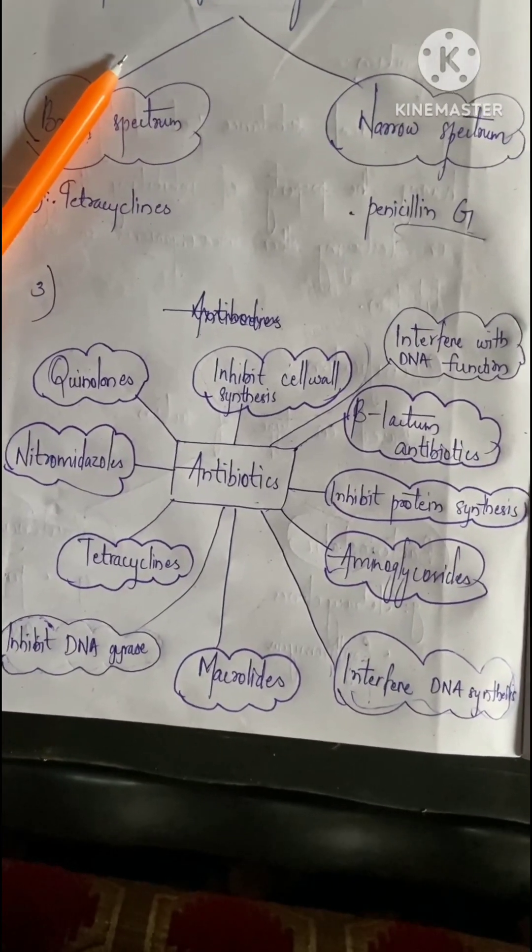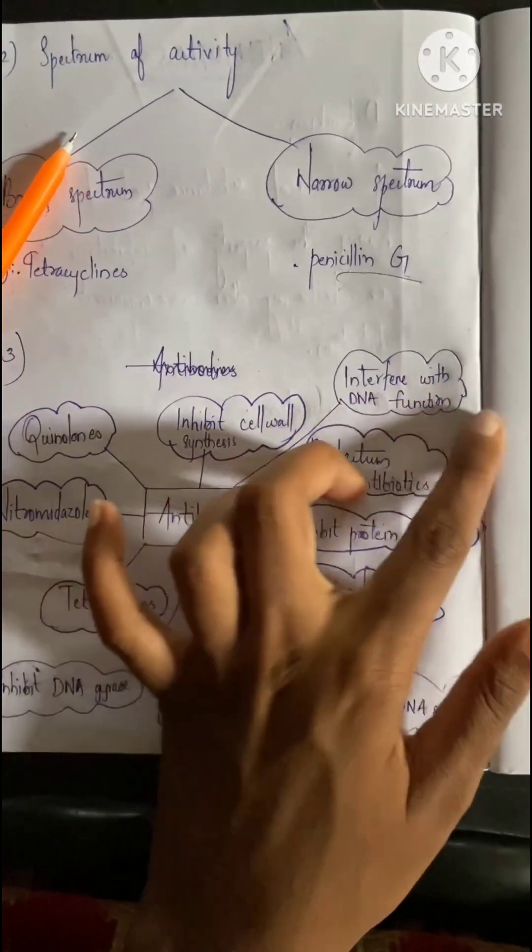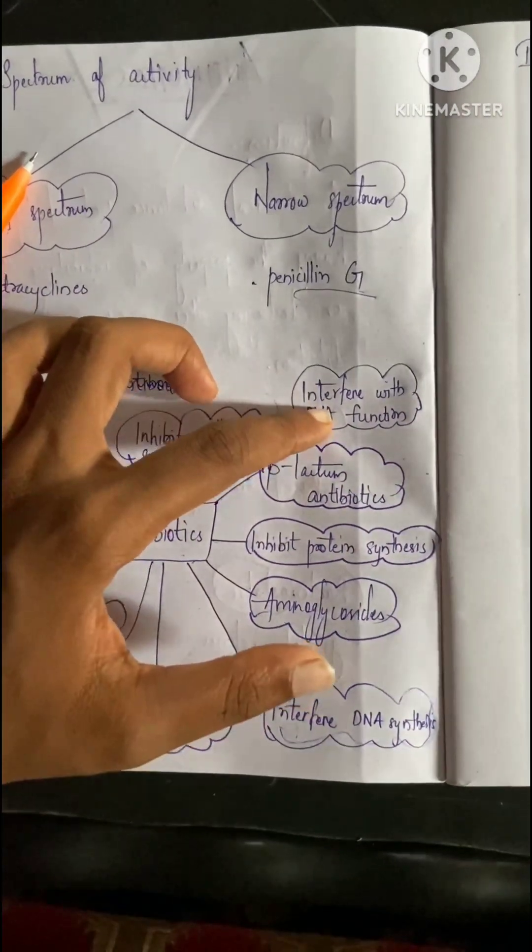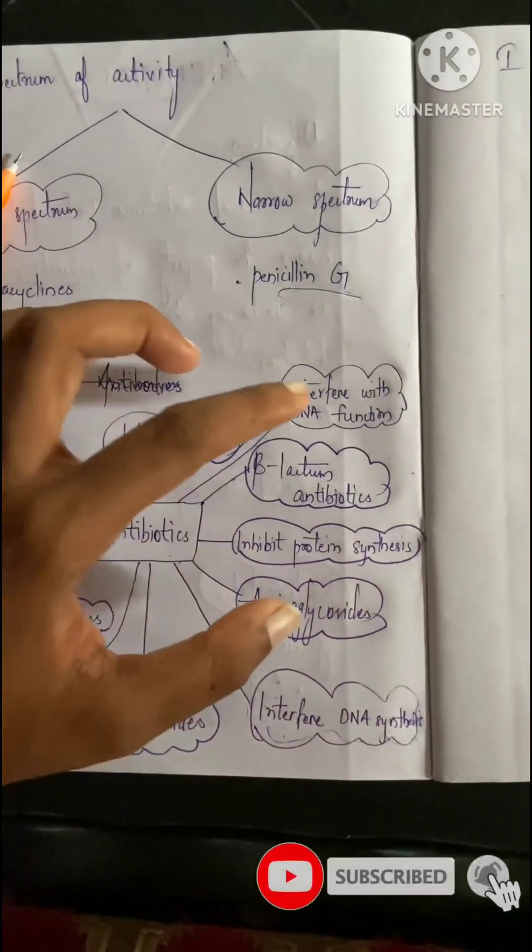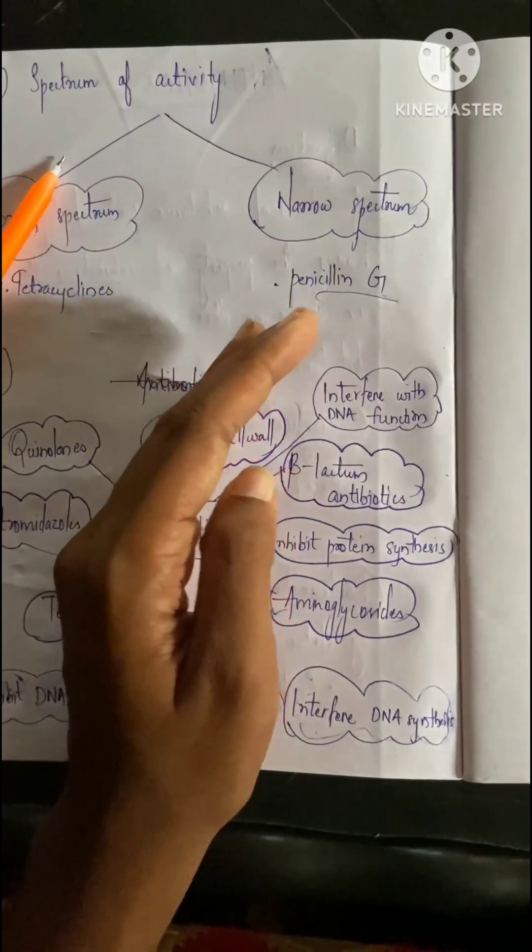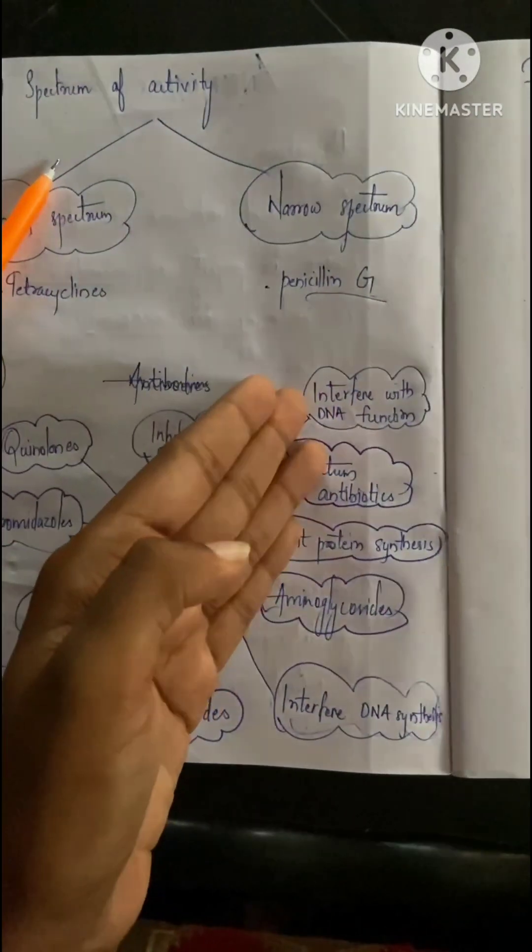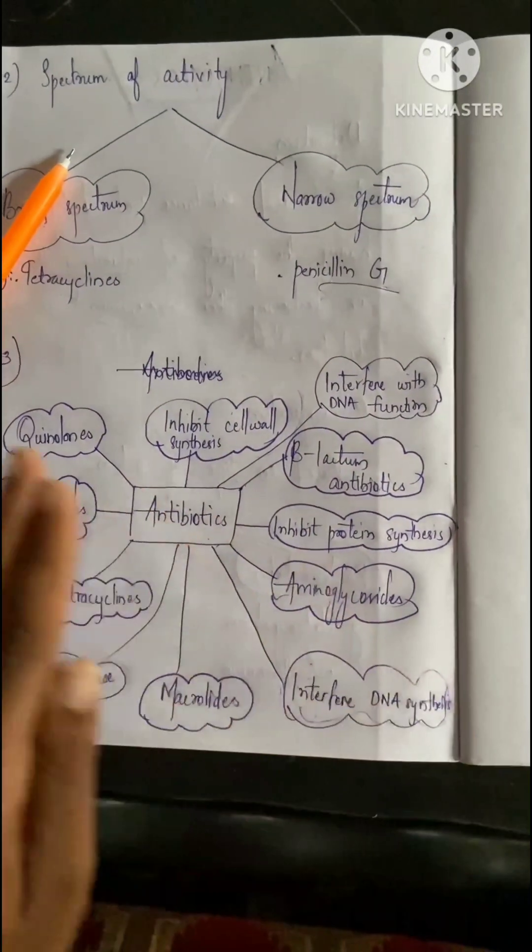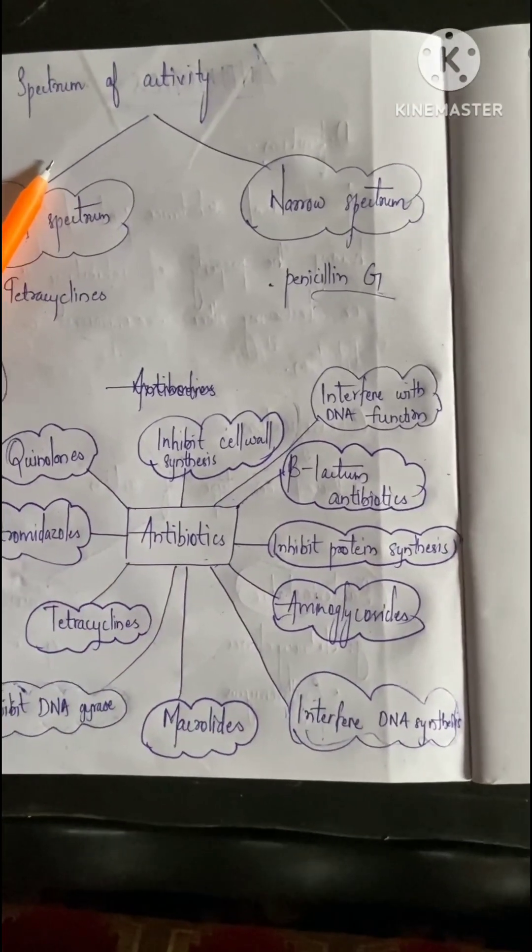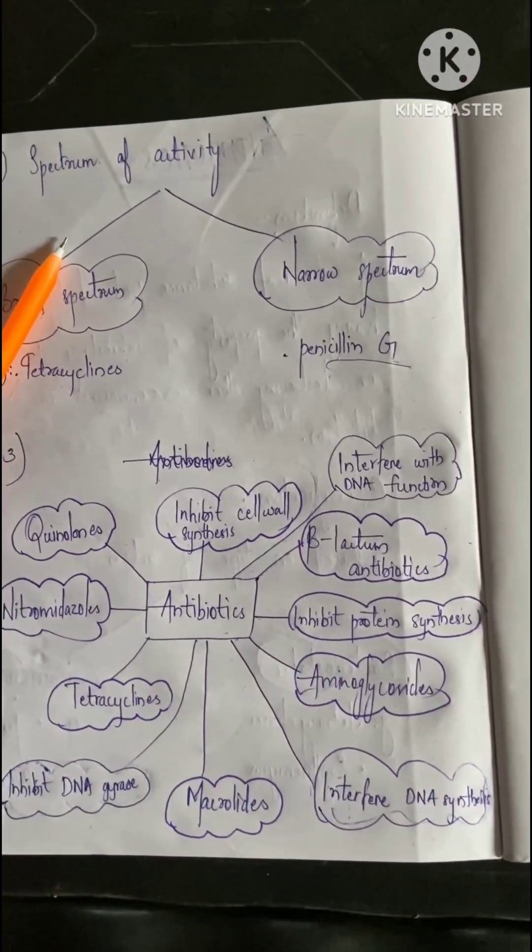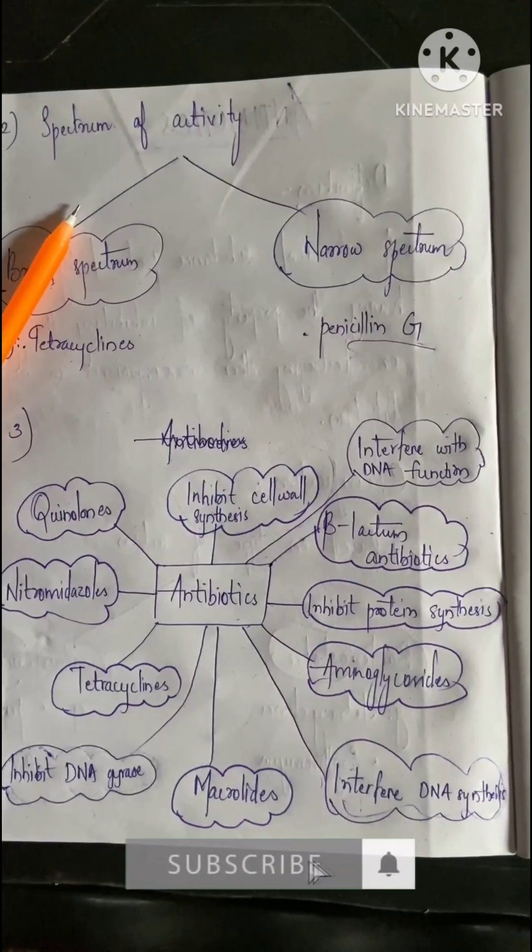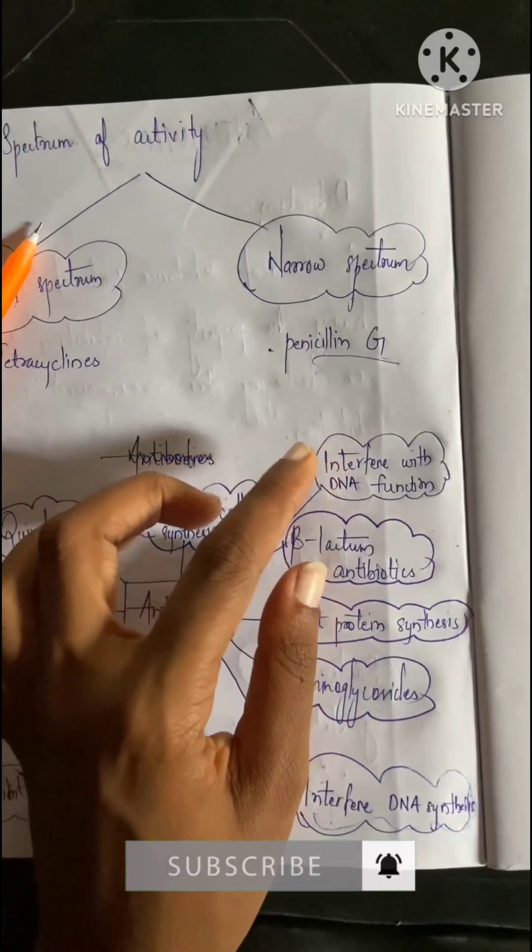Next, interfere with DNA function. This means interfering with the DNA functions of the microbes that enter our body. An example is rifampicin and metronidazole. Rifampicin is an anti-tubercular drug - tuberculosis is a communicable disease, and the medicine for tuberculosis comes under the classification of interfere with DNA function.